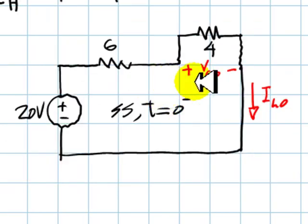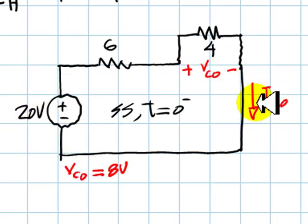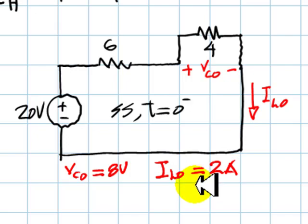From this circuit, immediately, we find with the voltage divider that VC0 is 8 volts, and the current in the inductor is simply 20 divided by 10, 2 amps. And we have the very first part of the exercise.